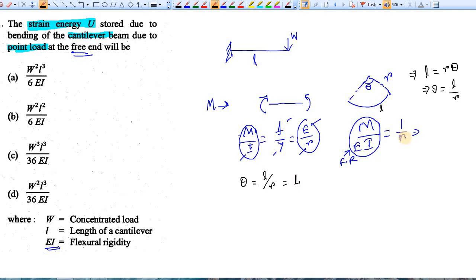So theta is l by r, or l times 1 by r. You know this is M by EI. If you apply a rotation theta by applying moment M, what is the work done? The work done is W'. So W' is nothing but M times theta by 2, and this work done is only valid for very small rotation.